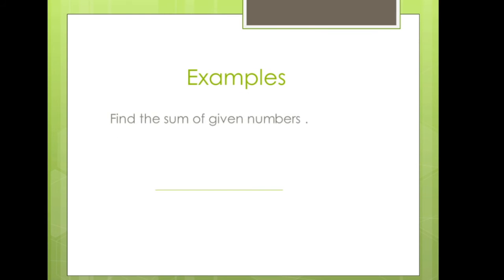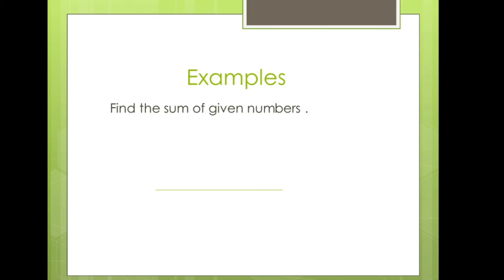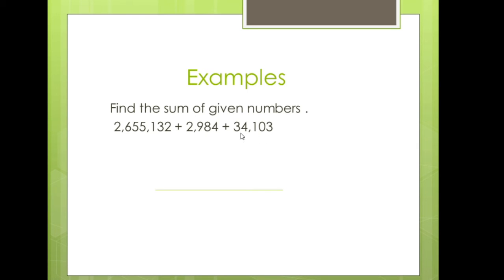Now the example is based on actual seven or eight digit numbers. It says: find the sum of the given numbers. Three numbers are given — this is basically a seven digit number, this is a four digit number, and this is a five digit number. Now you have to add them. The first number I have written is a seven digit number.